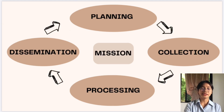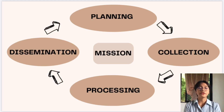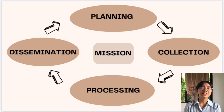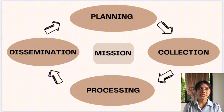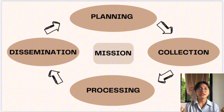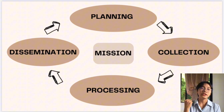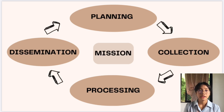Next is processing. In this stage, information undergoes processing which involves organizing, categorizing, and validating the data — checking whether the information is accurate or not.